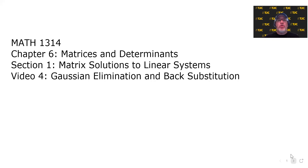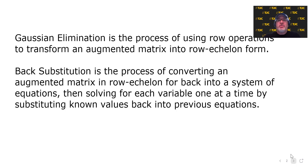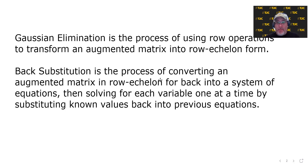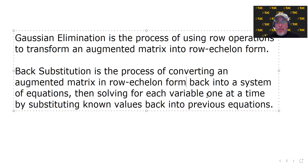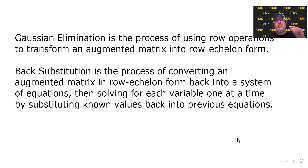It's actually very straightforward if you know where to look, so let's summarize the moves that we're going to do, and then we'll play them out. Gaussian elimination is the process of using row operations to transform an augmented matrix into row echelon form. Back substitution is the process of converting an augmented matrix in row echelon form back into a system of equations, then solving for each variable one at a time by substituting known values back into previous equations — hence the phrase back substitution.